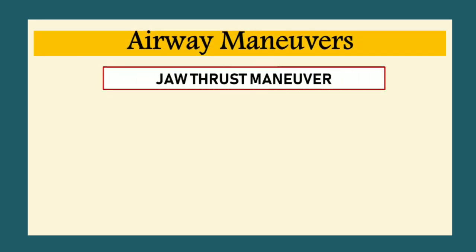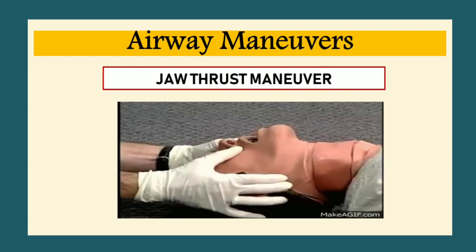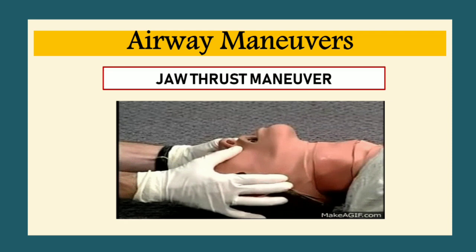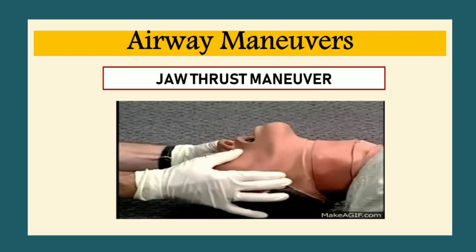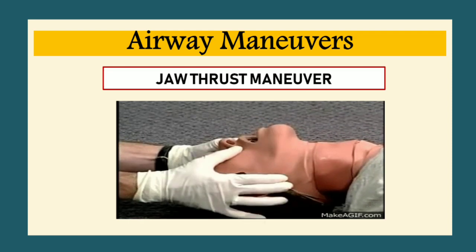The next manoeuvre is the jaw thrust manoeuvre. Stand at the head of the stretcher and place your palms on the patient's temples and your fingers under the mandibular rami. In patients with possible cervical spine injury, avoid extending the neck. Lift the mandible upward with your fingers until the lower incisors are higher than the upper incisors. This lifts the tongue along with the mandible, relieving upper airway obstruction. Pull up only on the bony parts of the mandible, as pressure to the soft tissue of the neck may obstruct the airway.